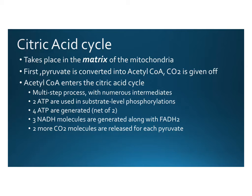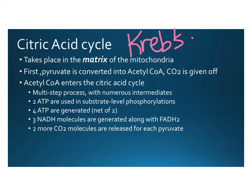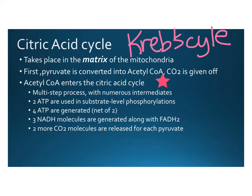The pyruvate generated during glycolysis in aerobic respiration enters the citric acid cycle, also called the Krebs cycle — these are the same thing. This process takes place within the mitochondria in the area called the matrix, which is the fluid-filled interior. In the first step, pyruvate is converted into acetyl-CoA, or acetyl-Coenzyme A. In this process, carbon dioxide is released — one molecule of CO2 for every pyruvate, taking us from three carbons down to two. The acetyl-Coenzyme A then enters the citric acid cycle.